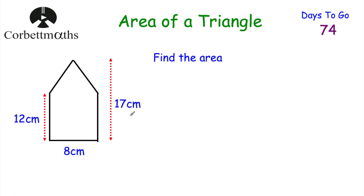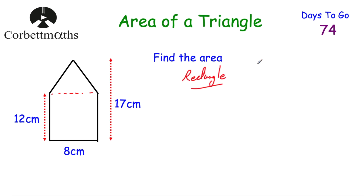This compound shape looks like a little house — a rectangle with a triangle attached to the top. I'm going to chop it into the rectangle below and the triangle above, find each area, and add them together. For the rectangle, the area is length multiplied by width: 12 times 8 equals 96 centimetres squared.